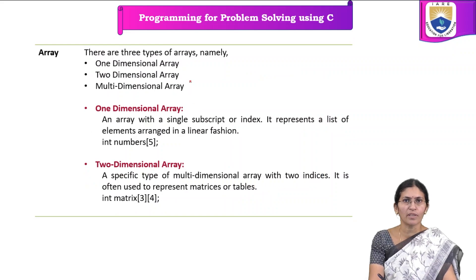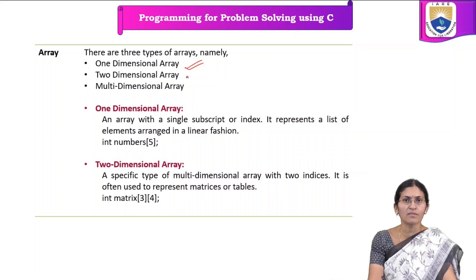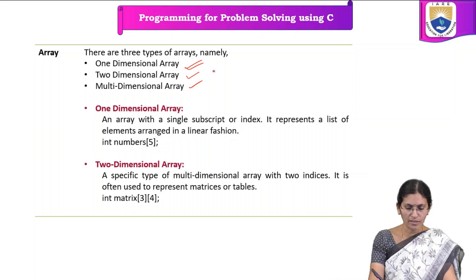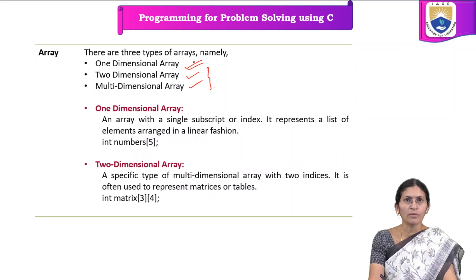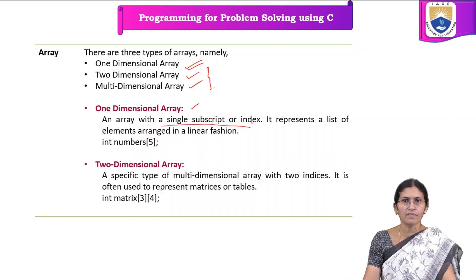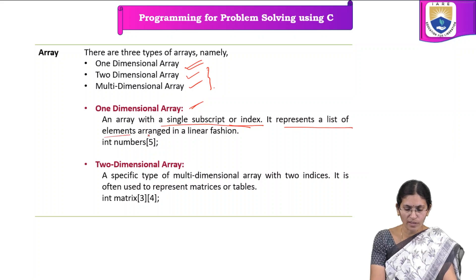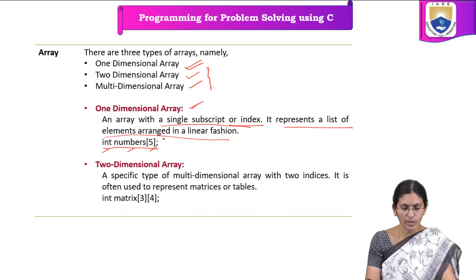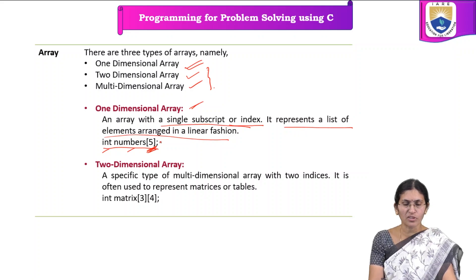Coming to the types of arrays — we have three types: first is 1-dimensional array, next is 2-dimensional array, and then multi-dimensional array. An array with a single subscript or index is called a 1-dimensional array, also known as a single-dimensional array. It represents a list of elements arranged in a linear fashion. The declaration specifies the data type, name of the array, and size. The size is fixed at the time of declaration and the maximum elements it can hold is 5.